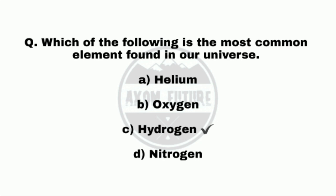Question 25. Which of the following is the most common element found in our universe? Option A: Helium. Option B: Oxygen. Option C: Hydrogen. Option D: Nitrogen. Answer: Option C — Hydrogen.